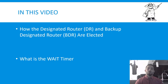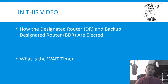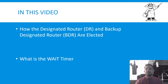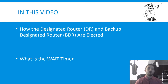In the last video we covered what the designated router and the backup designated router are and why we need them. In this video we're going to cover how a router becomes a DR or BDR and discuss a timer that was mentioned but not fully explained — the wait timer. There's a link in the description to a playlist with all the course videos. All right, let's begin.